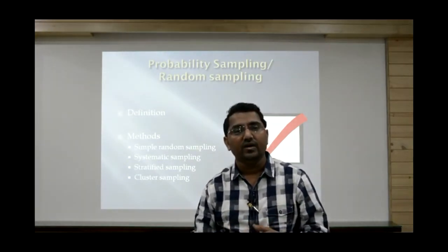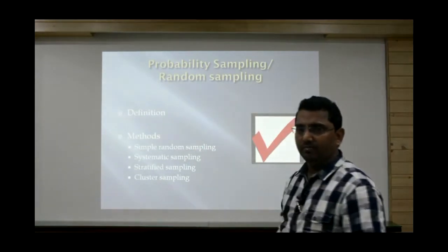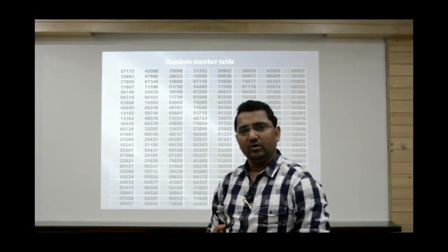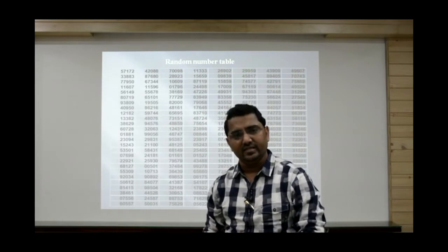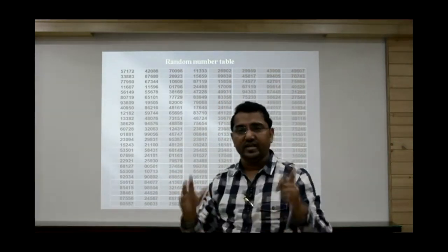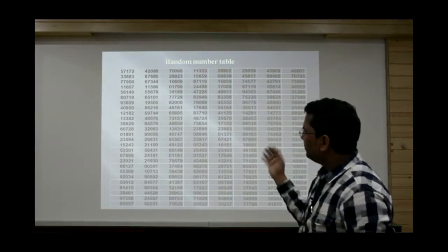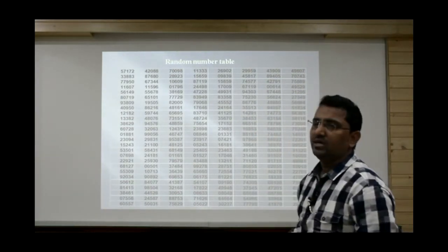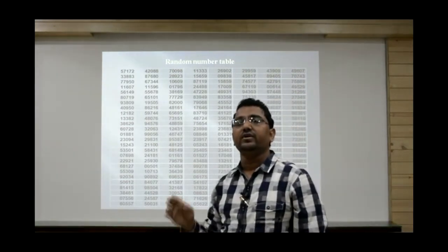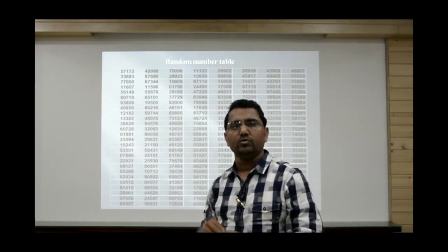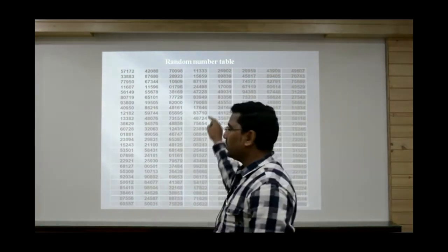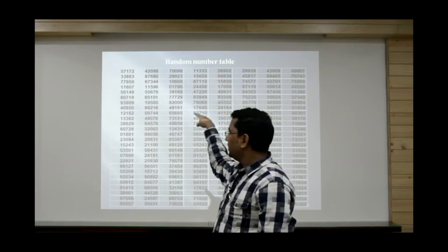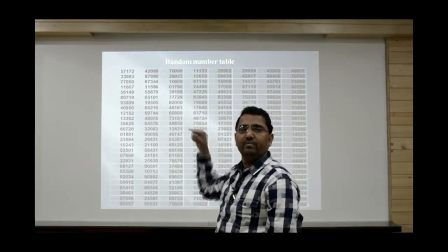When the population size is larger — say 1,000 or 10,000 persons — the lottery method fails. In that case, we use random numbers. You can generate random numbers with a calculator, with MS Excel, or by reading from random number tables available in statistical tables. To read from a random number table, first decide what size of random number you require — for example, two-digit numbers. Then place your finger anywhere blindly, and the digit beneath your finger becomes your starting point.